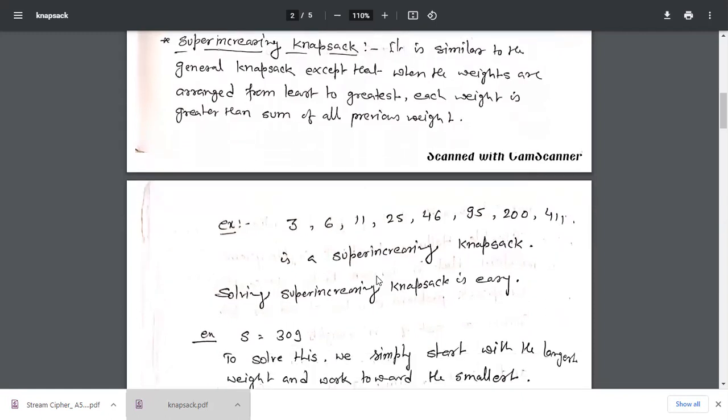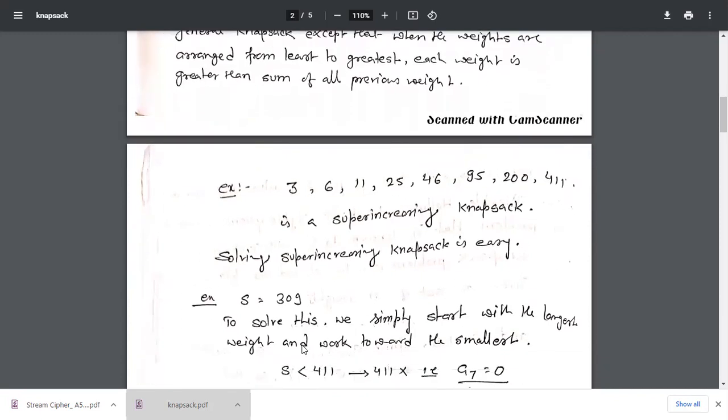If we have super increasing knapsack, we can easily solve and we can easily get the value of A. For this we consider an example S = 309. How to solve this? To solve this we simply start with the largest weight and work towards the smallest.